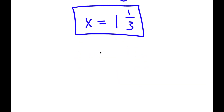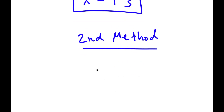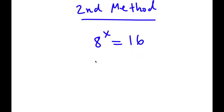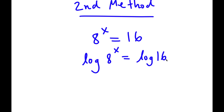Now I actually have a second method to solving this problem. So for my second method, I again start with 8 to the power of x is equal to 16. Instead of rewriting 8 and 16 in different forms, I'm actually going to take the log on both sides. So now I have log 8 to the power of x is equal to log 16.